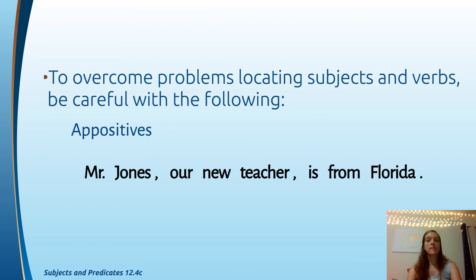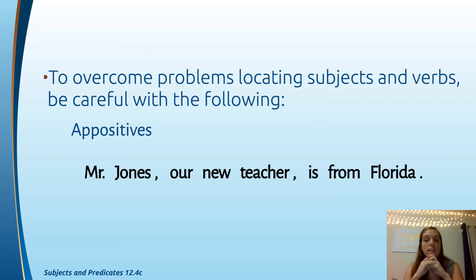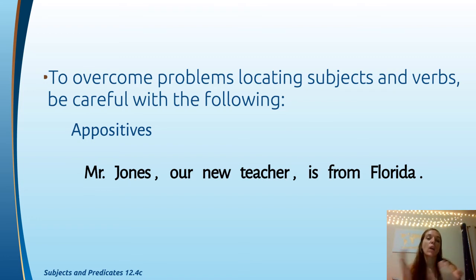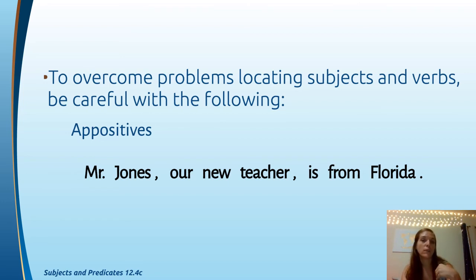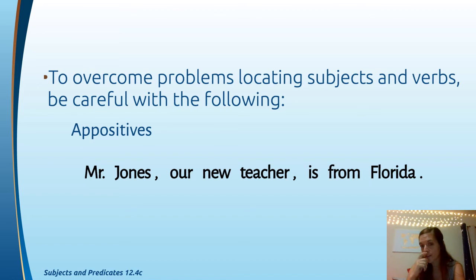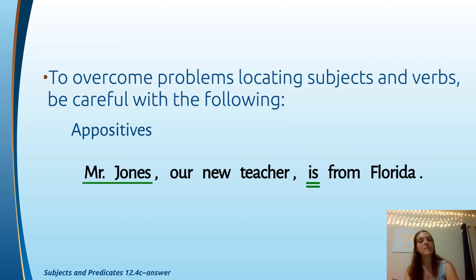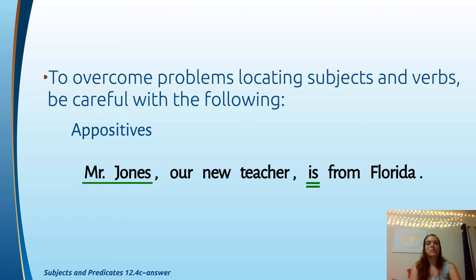Appositives are phrases you can take out — that's why they have commas around them. Sometimes appositives don't have commas because they're considered necessary, but they still describe the noun they're close to. For example: 'Mr. Jones, our new teacher, is from Florida.' The appositive is 'our new teacher.' Be careful — the subject is 'Mr. Jones,' not 'teacher,' even though teacher describes the subject. Don't pull your subject from the appositive phrase.